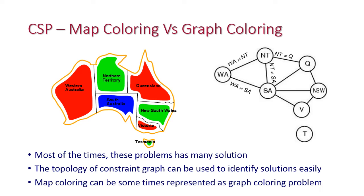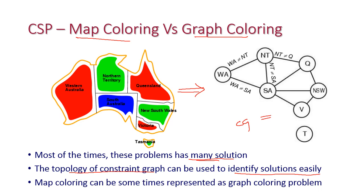Map coloring versus graph coloring: we can convert the map into a graph. Most of the time this problem has many solutions, and the topology of the constraint graph can be used to identify solutions easily. If the map is converted into a graph, we can identify solutions more easily compared to working directly with the map regions. The map coloring problem can sometimes be represented as a graph coloring problem.